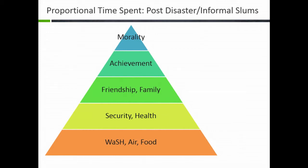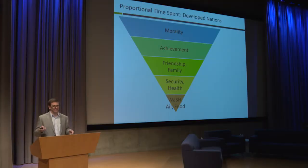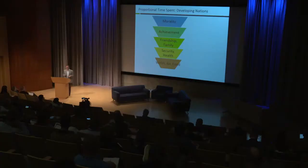I want to look at this in terms of time spent, because it's these differences we have to use in judgment for design. In post-disaster, informal slums, and poor rural settings, you spend a lot of time worrying about food, water, and security before you can think about achievement. Think about us today — I stayed at the Ayers Hotel, didn't worry about water, checked in with family by text, and was ready to achieve by 8 a.m. I've flipped this around — not to imply we're more moral, but we have a lot more time on our hands. Currently developing countries, which are a majority of the global population, might look at it like this.